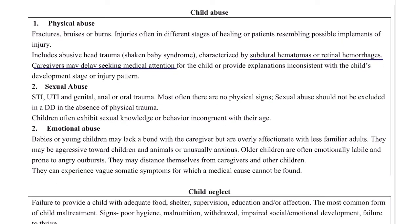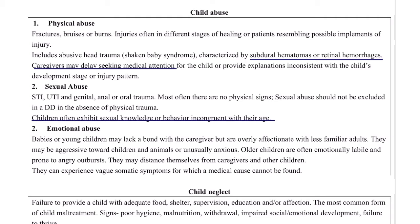Sexual abuse: children who exhibit sexual knowledge or behavior incongruent with their age — for example, a five-year-old knowing everything about sex — or the presence of STIs, UTIs, or genital, anal, or oral trauma, are indicative of sexual abuse. This should be reported to child protective services. Most often there are no physical signs, because abusers typically do not abuse in ways that leave obvious physical evidence.